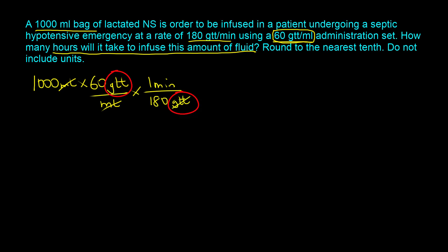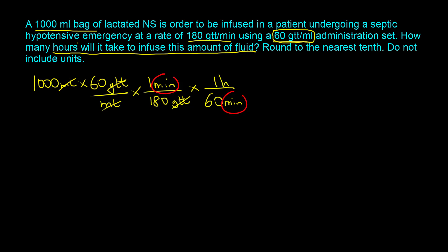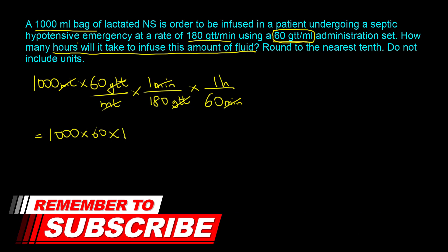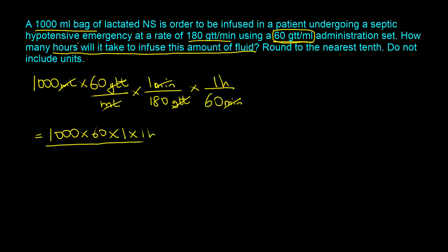The drop term cancels out and we are left with time in minutes. Since the question asks for hours, we apply the conversion factor: 60 minutes make one hour, so the minutes cancel out. Taking all numerator terms — 1000 times 60 times 1 hour — and dividing by the denominator — 180 times 60 — gives us 5.56 hours. Rounded to the nearest tenth and without units, the answer is 5.6.